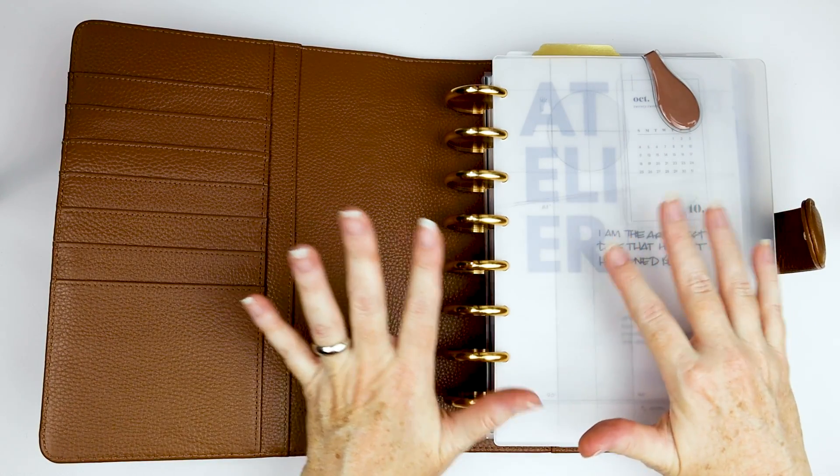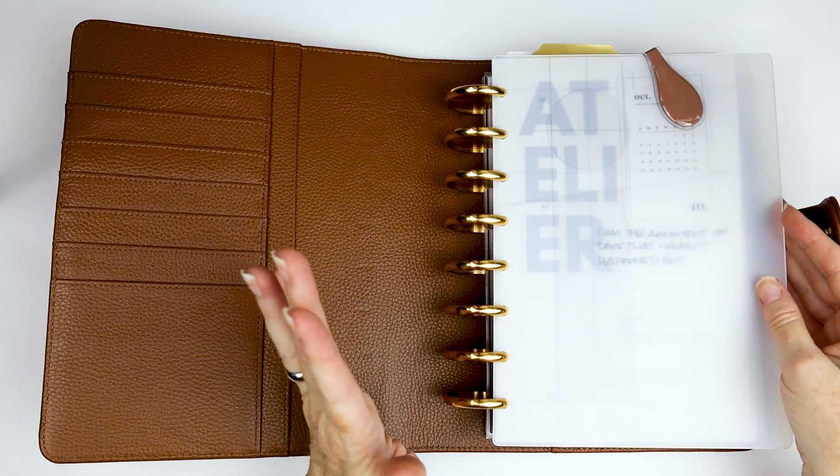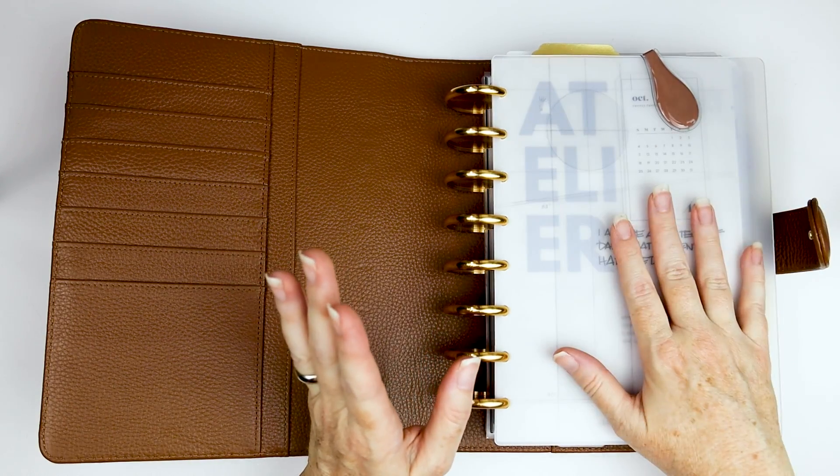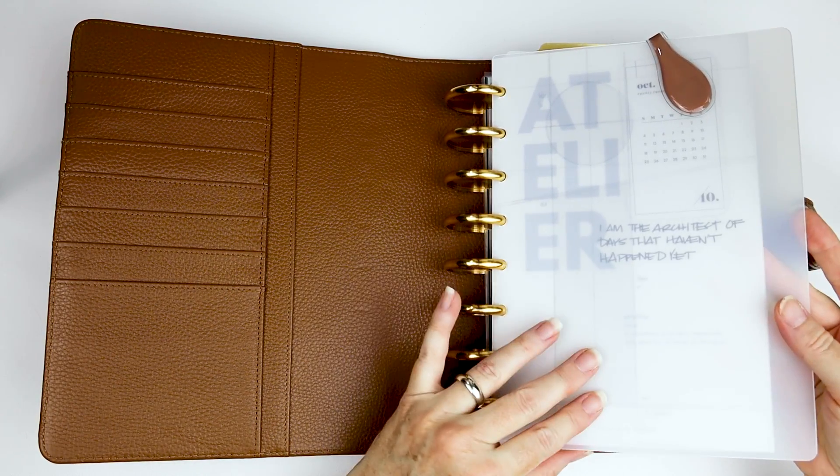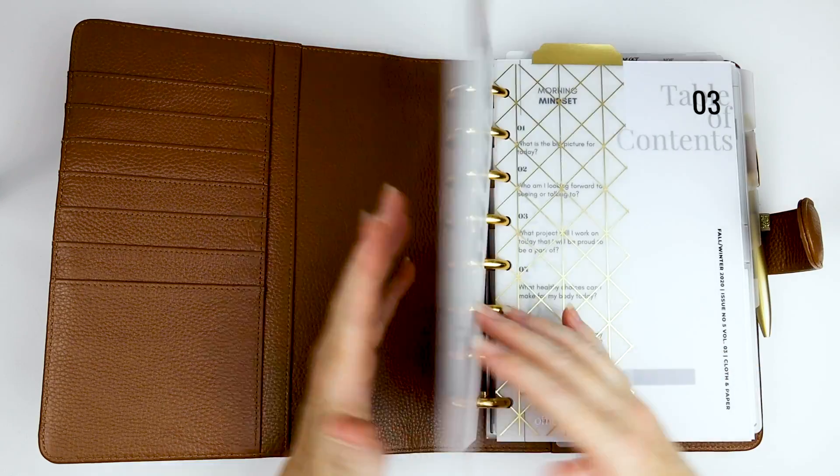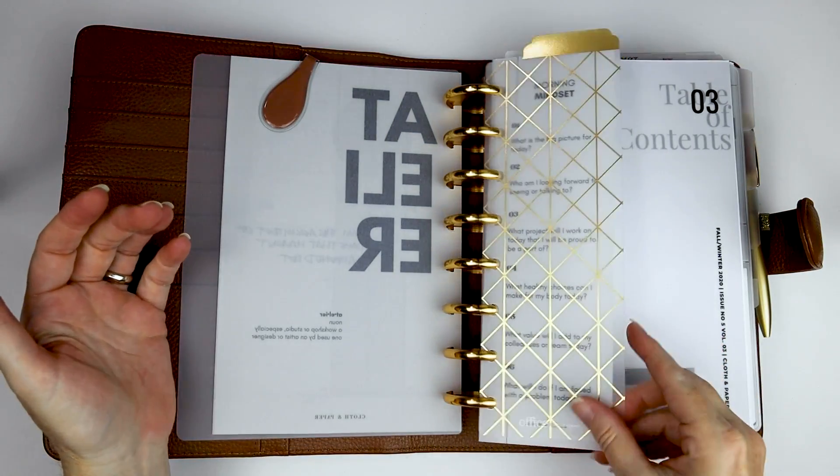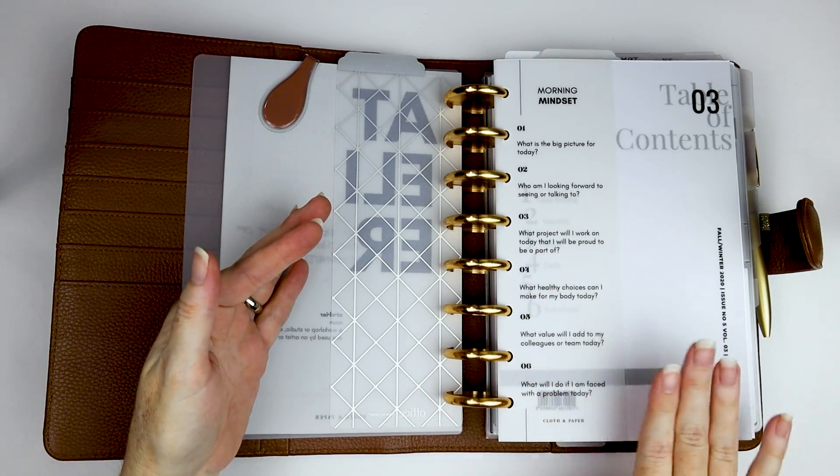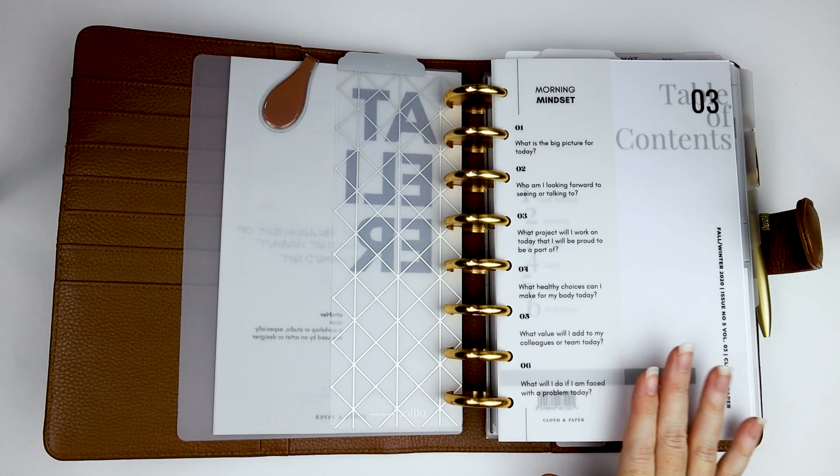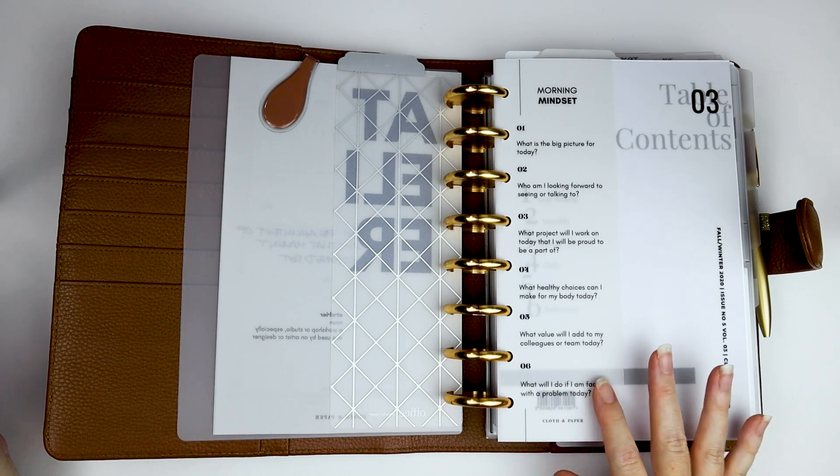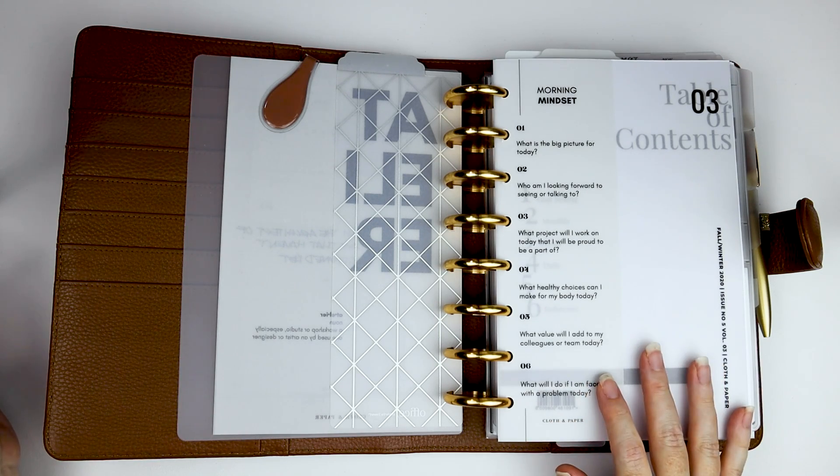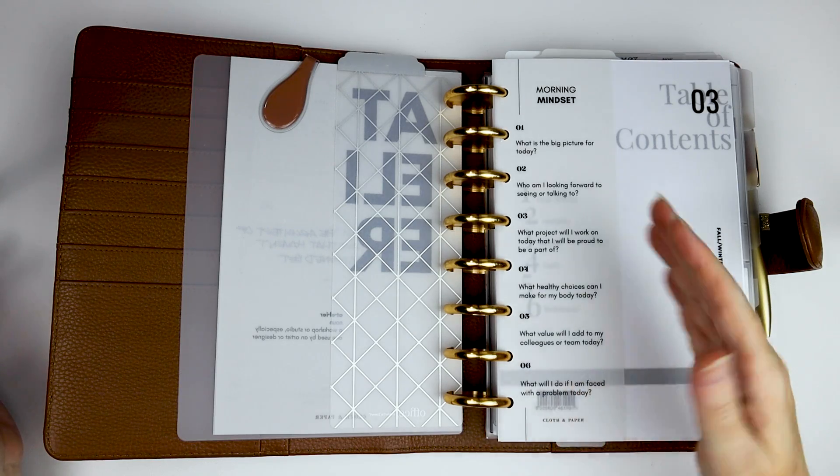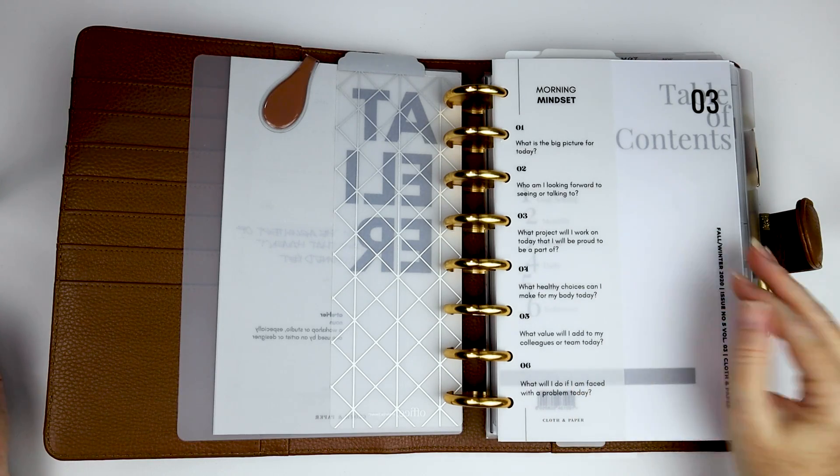A lot of my inserts and stuff are from Cloth and Paper. If I don't say what they are, that's pretty much where they're from. So I do have plastic covers, some dashboards, sorts of things. Morning mindset, which I really do like. I originally got it in a subscription box quite a few months ago now. I think it was sometime this summer. But it is a list of things that I would like to remember every day.